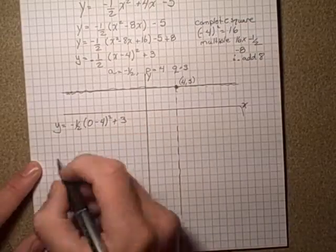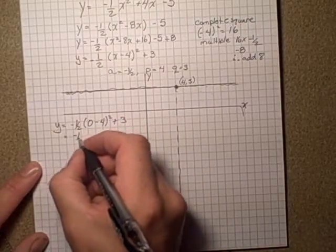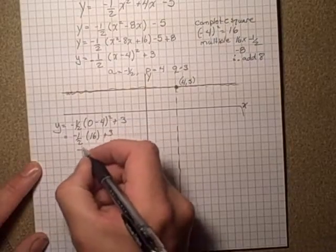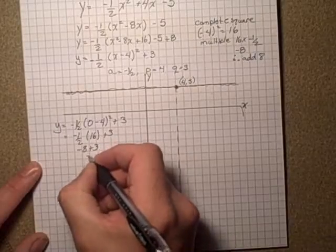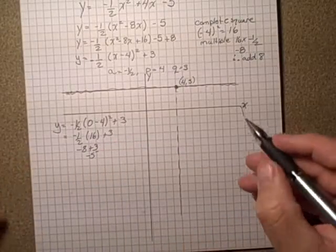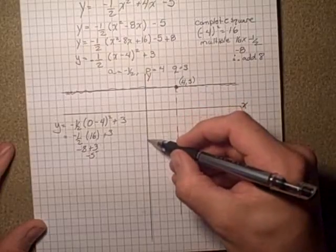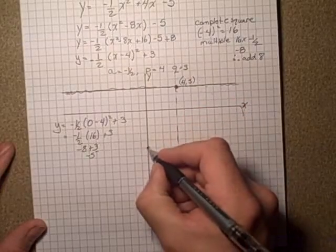So in this case, that's equal to negative one half times 16 plus three, so negative eight plus three, and that's negative five. So y-intercept is negative five.